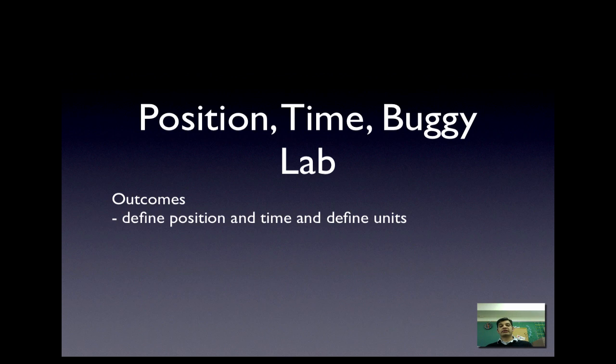Our outcomes: we want to define position and time and define the units that go with it. We want to talk about reviewing lines and slope, a little bit of Algebra 1. And we're going to get you set up to do a lab called the Buggy Lab, running these little mechanical buggies and measuring some properties and learning physics in the process.